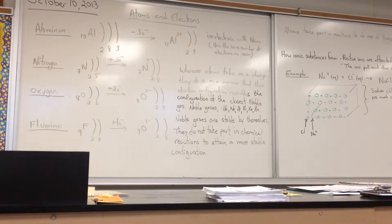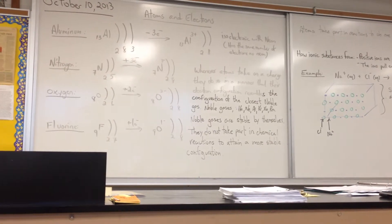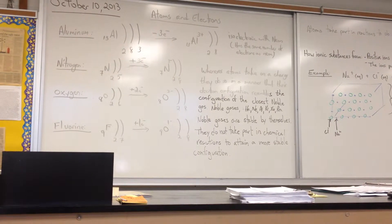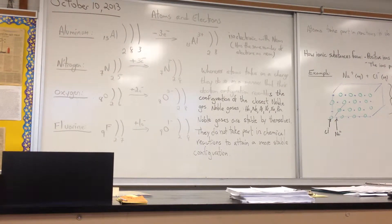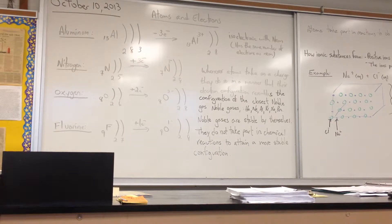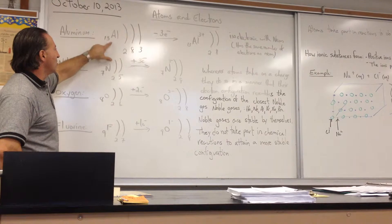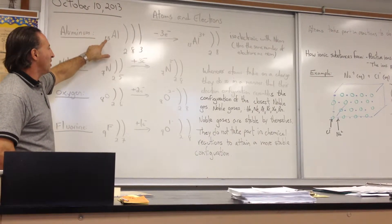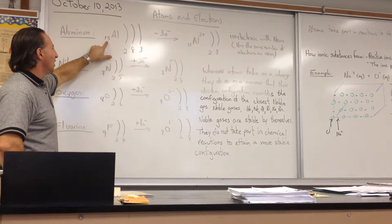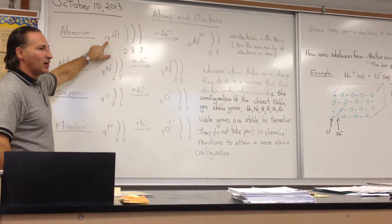Okay, so we're talking about the configuration of atoms and how the electrons are going to the different orbitals. For example, aluminum, which has 13 protons, and this is what the atomic number tells us. That number that you write on the bottom left-hand corner of the symbol tells you how many protons are in the element.